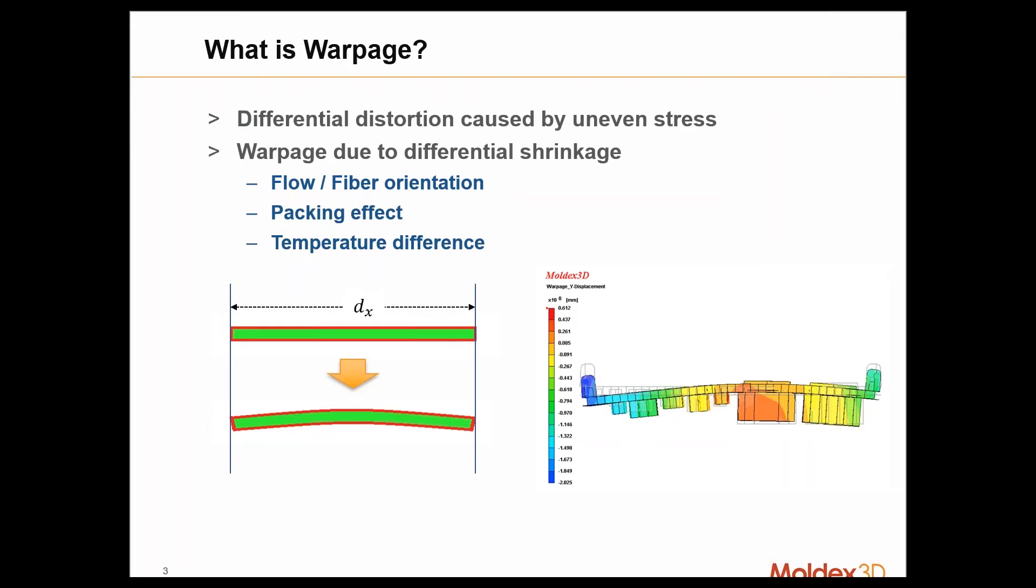Some of the factors that can affect that are orientation of the polymer flow and of any fiber fillers that might be in the material, how the part is packed out, and any temperature differences within the part or within the mold itself. These can all influence how a part shrinks and warps. So we'll talk about each of these in general.